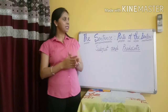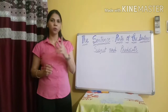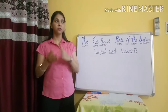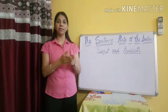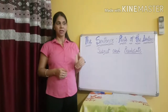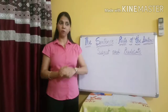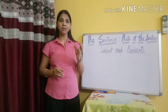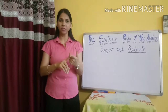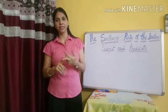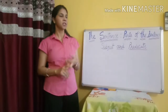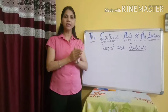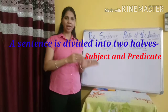Now, what are the important things about a sentence? First, we name the person or thing to whom we talk about. And the other thing, we say something about that person or thing. So we conclude that a sentence is divided into two halves: the subject and the predicate.